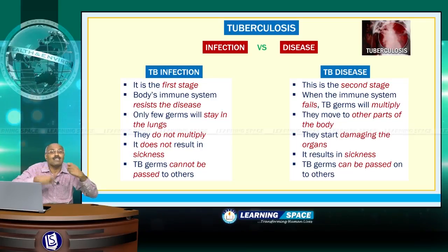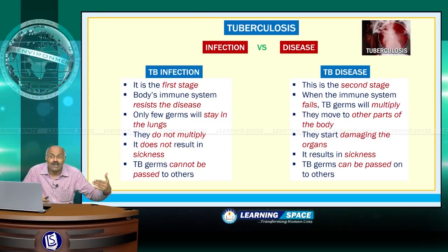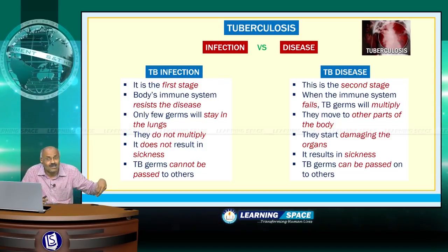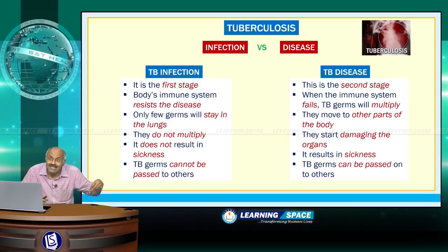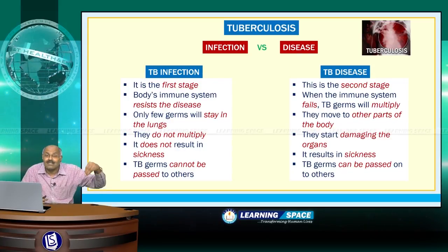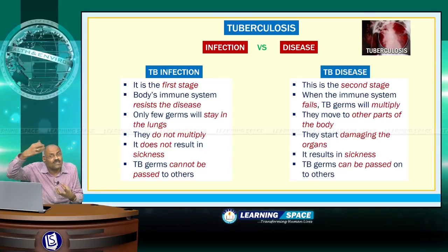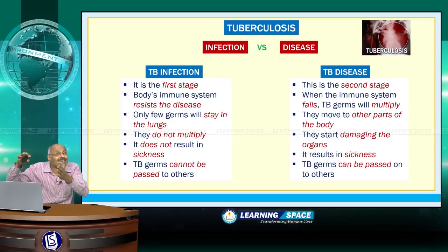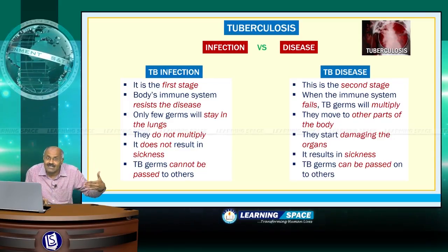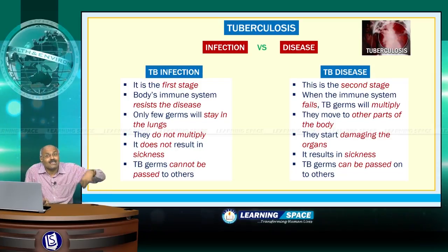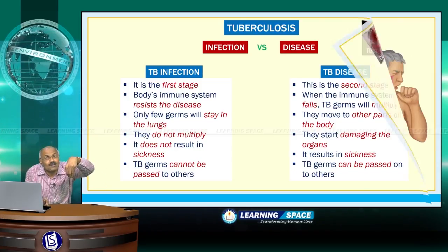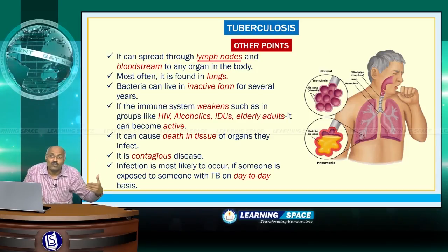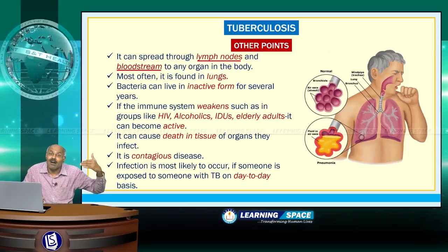TB disease is the second stage. When the immune system fails, TB germs multiply and move to other parts of the body, damaging organs. It results in sickness, and unfortunately these TB germs can be passed on to others. So TB infection is not dangerous, but TB disease is very dangerous.